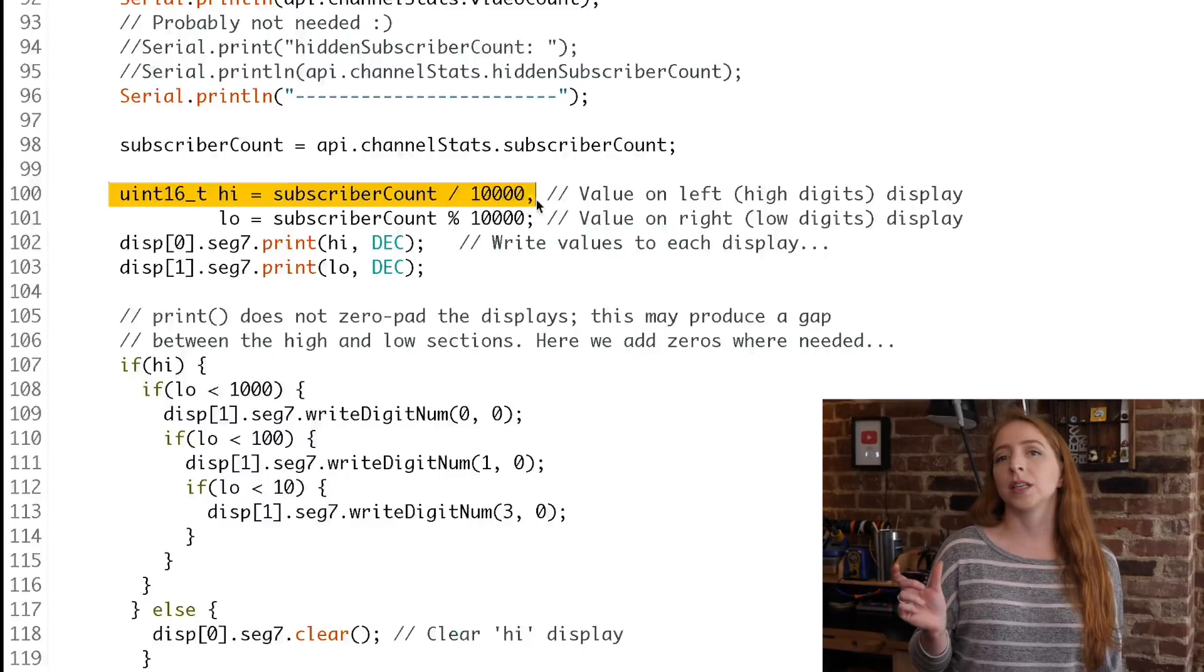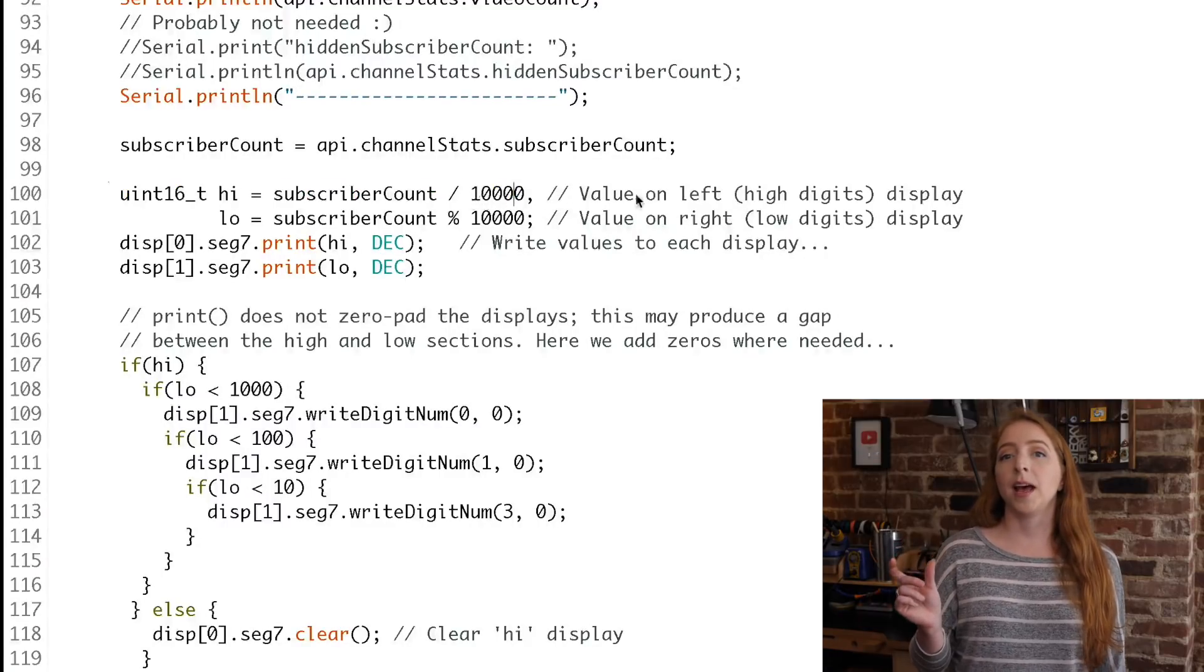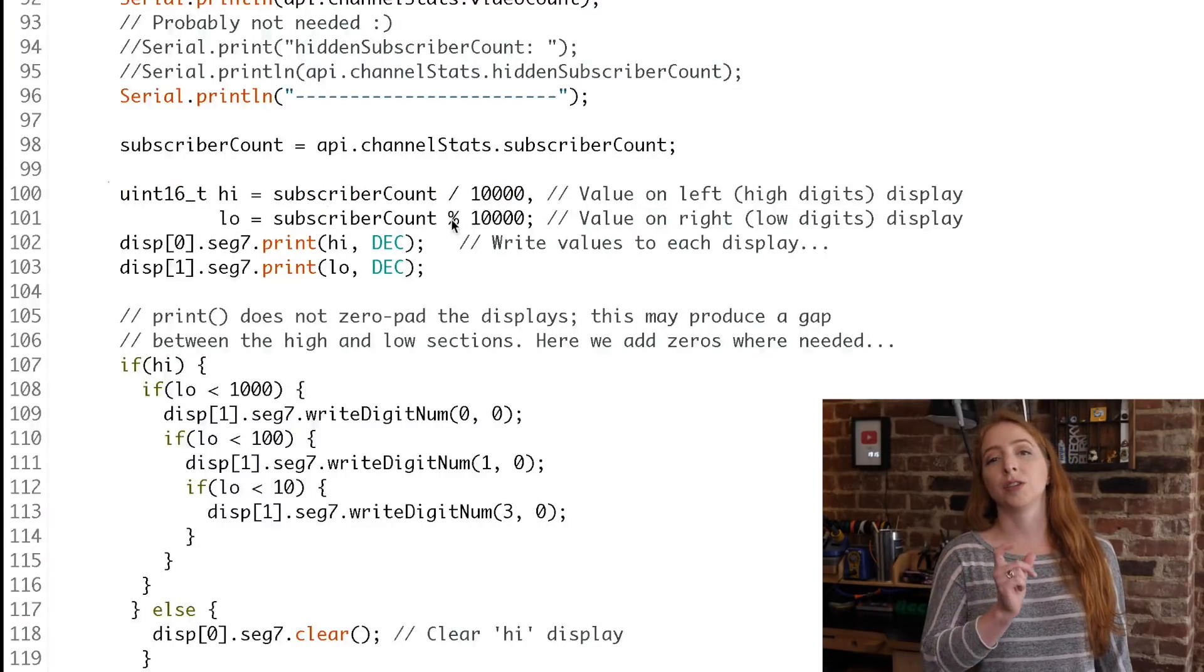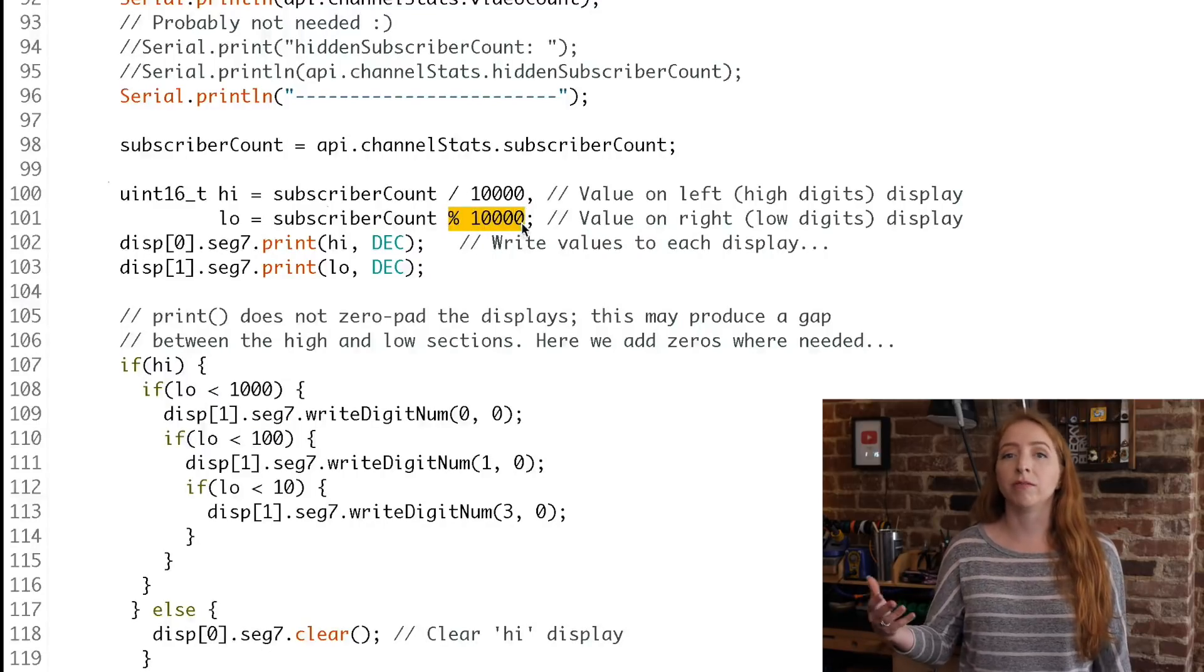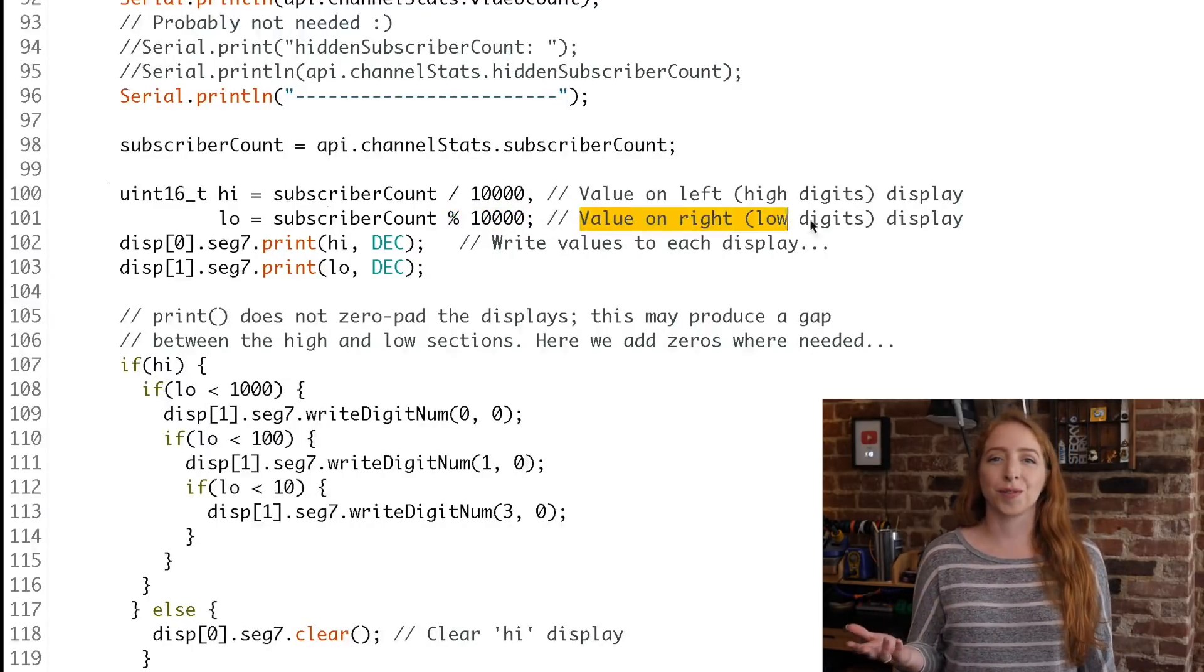Divide the count by 10,000 to get the digits for the left display, and then take the remainder—that's what this modulo does—divide by and then take the remainder of 10,000 to get the digits for the right display.